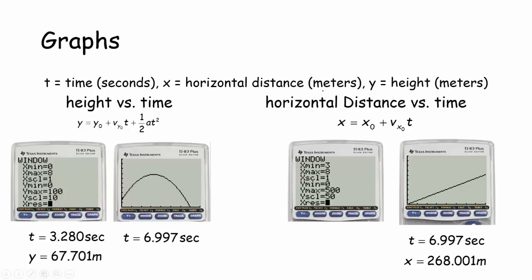Let's look at the horizontal distance first. How far is the potato traveling horizontally? This depends on x_0 — how far horizontally we were standing from the origin. Since Kyle is standing on his garage and the origin is on the ground directly below him, x_0 is just zero. Then we add v_x0 times t, because the horizontal speed times time gives horizontal distance. So x equals 50 cosine of 40 times t.